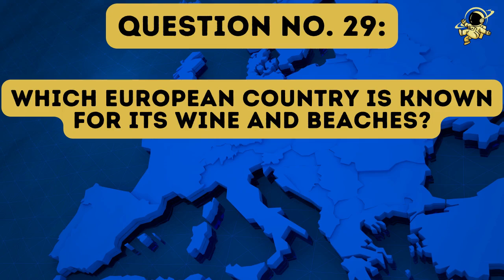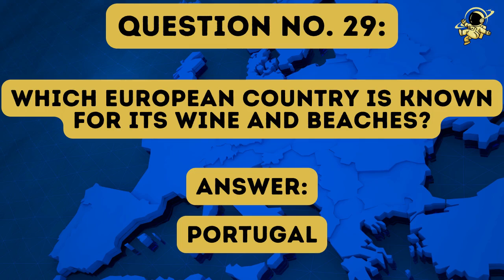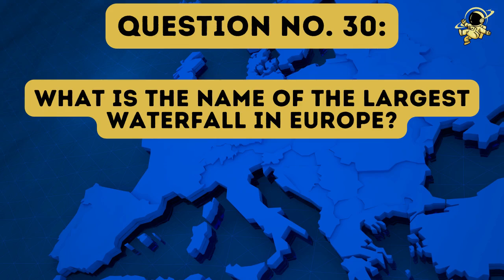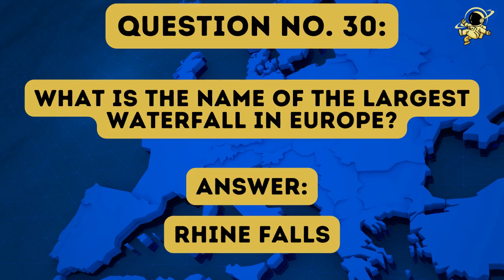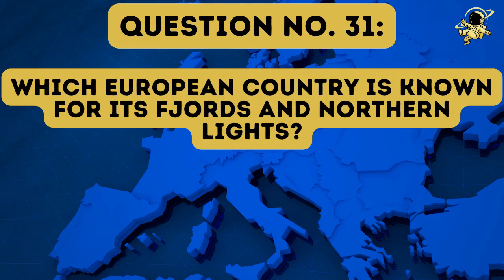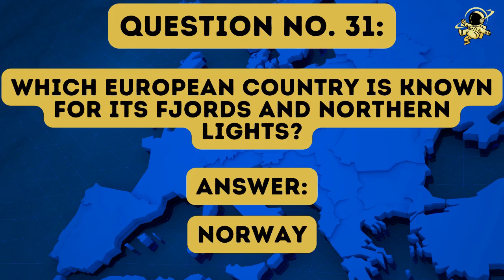Question number twenty-nine: Which European country is known for its wine and beaches? And the answer to question number twenty-nine is Portugal — they really have great wine and some awesome beaches. Question number thirty: What is the name of the largest waterfall in Europe? And the answer to question number thirty is the Rheinfalls. Question number thirty-one: Which European country is known for its fjords and northern lights? And the answer to question number thirty-one is once again Norway.